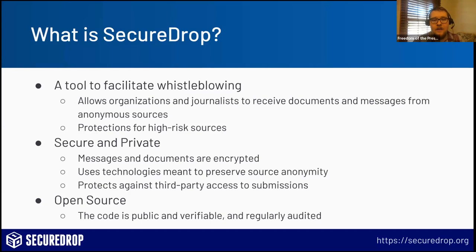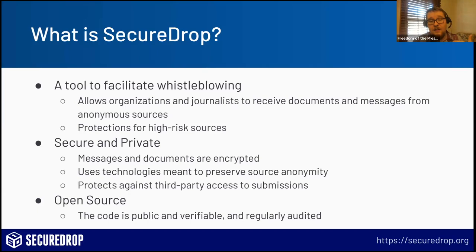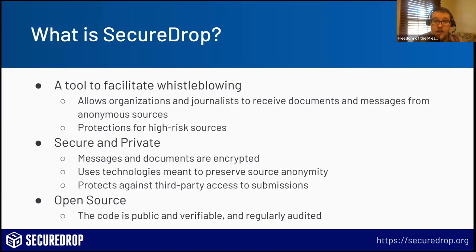SecureDrop uses technologies meant to preserve source anonymity and protects against third-party access to submissions. The only people who can see what you submit are the intended recipients. The decryption key lives only on a very special computer within their organization. SecureDrop is also open source, meaning the code is public and verifiable. Security researchers can inspect it and confirm it does what we say. We also have our code audited regularly by security professionals to keep sources and journalists as safe as possible.